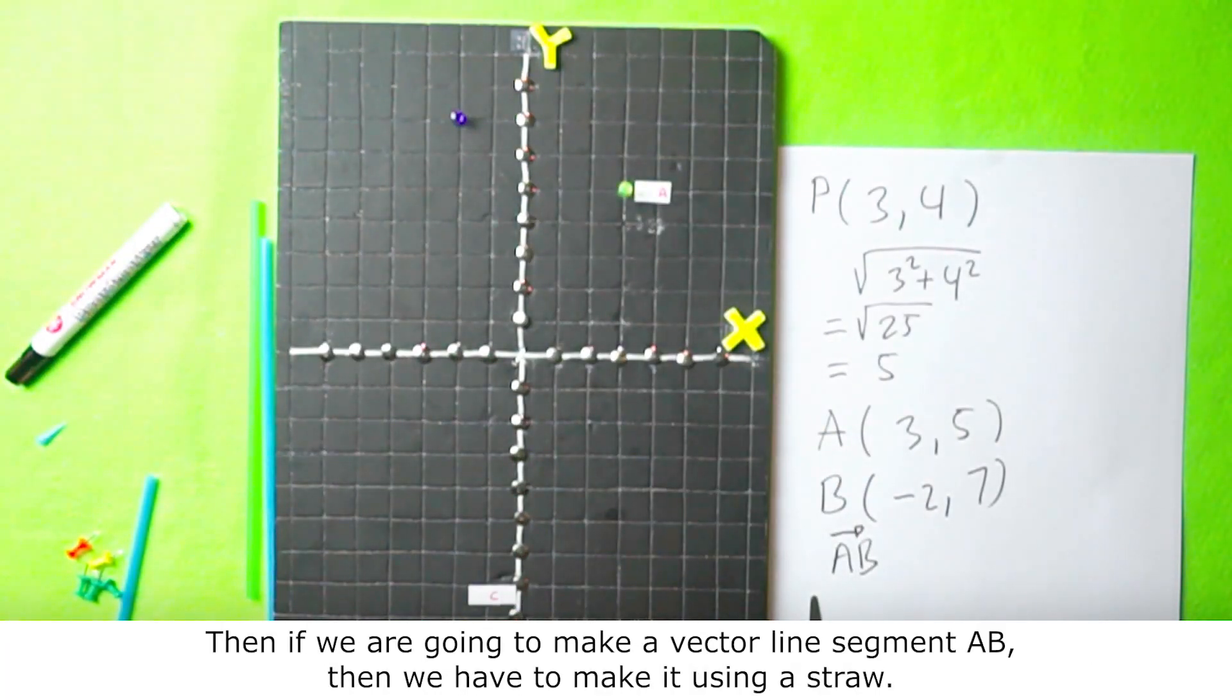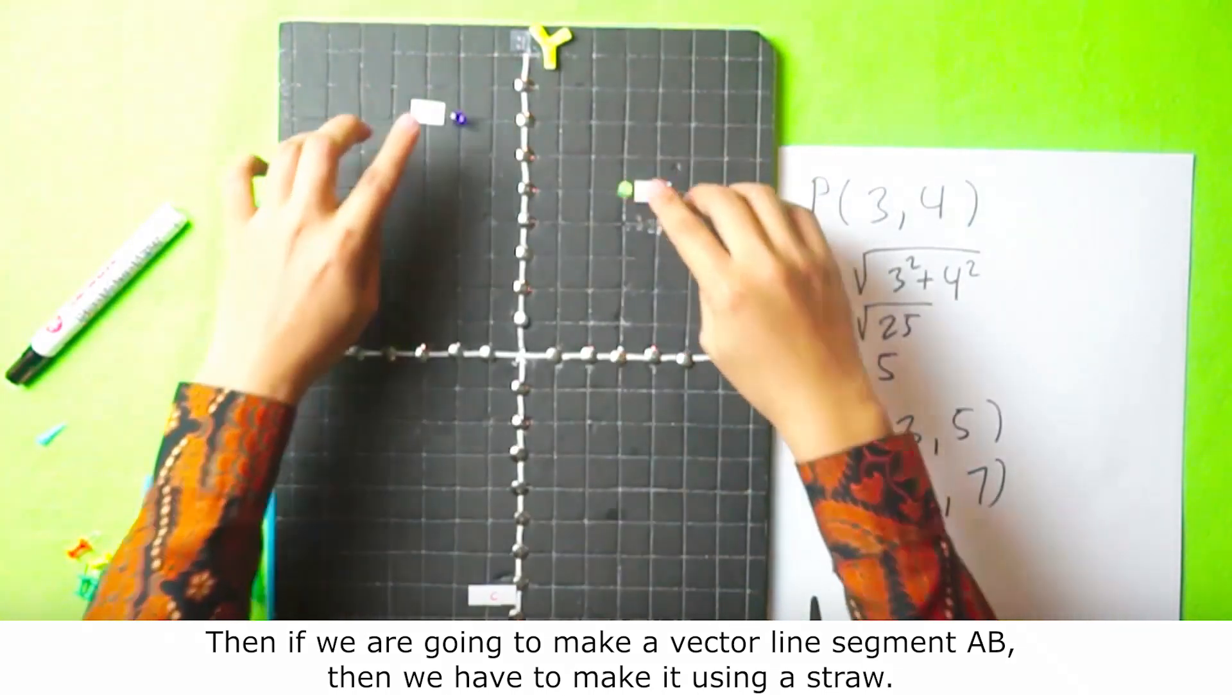Then if we are going to make a vector line segment AB, then we have to make it using a straw.